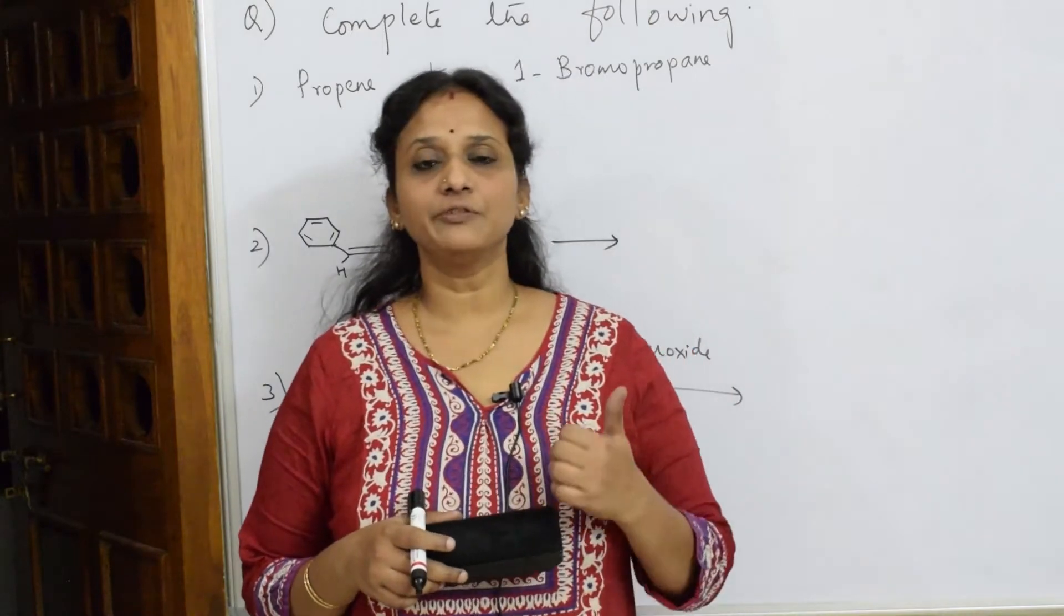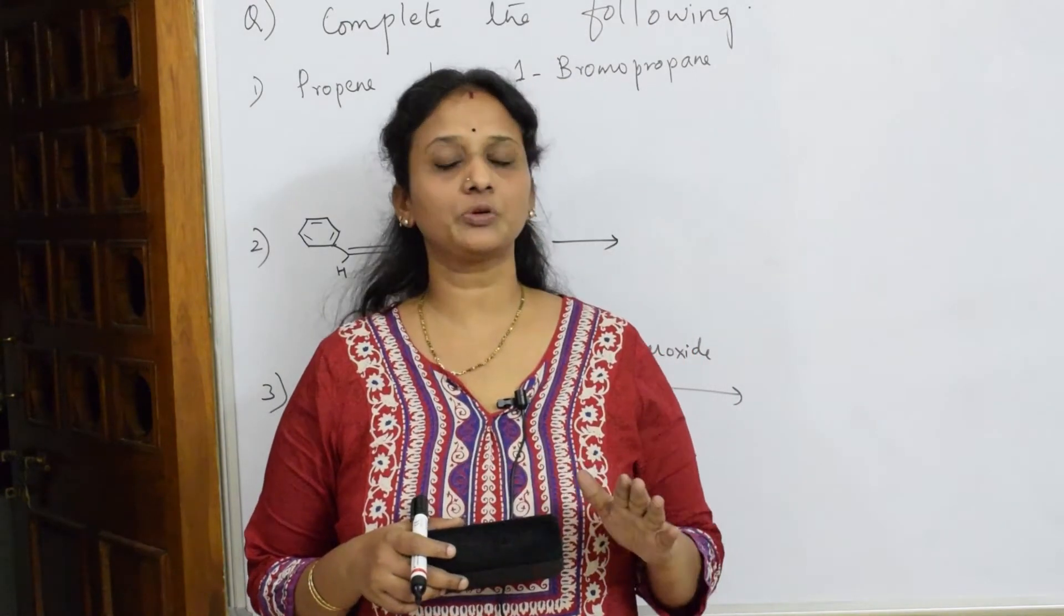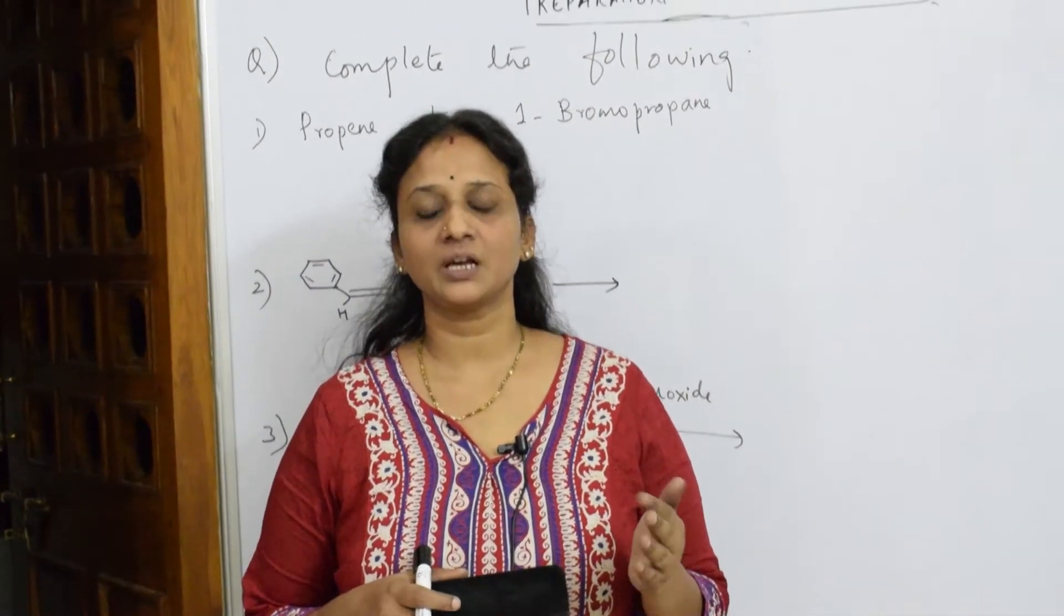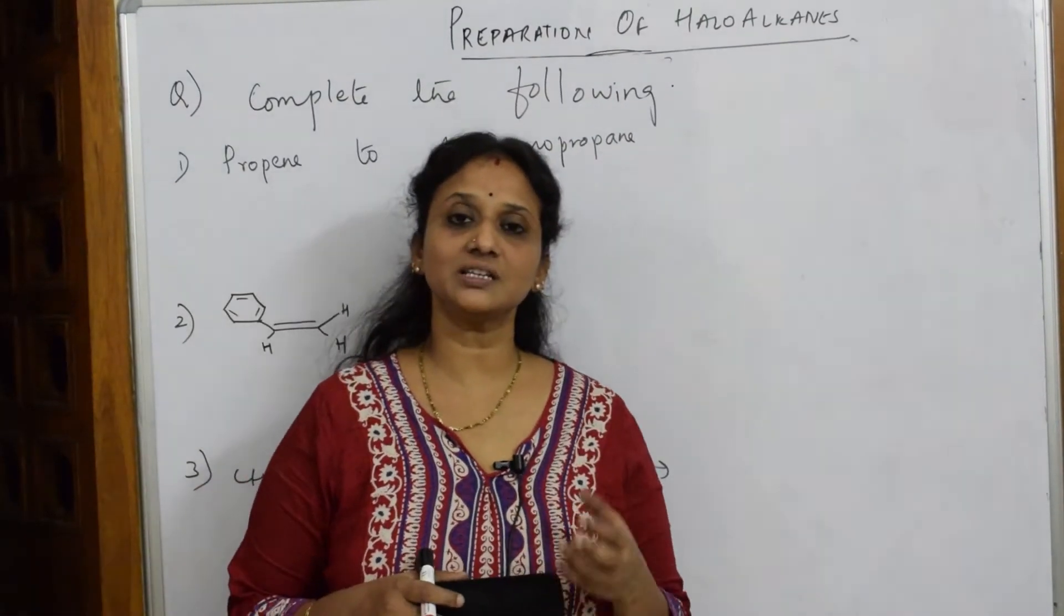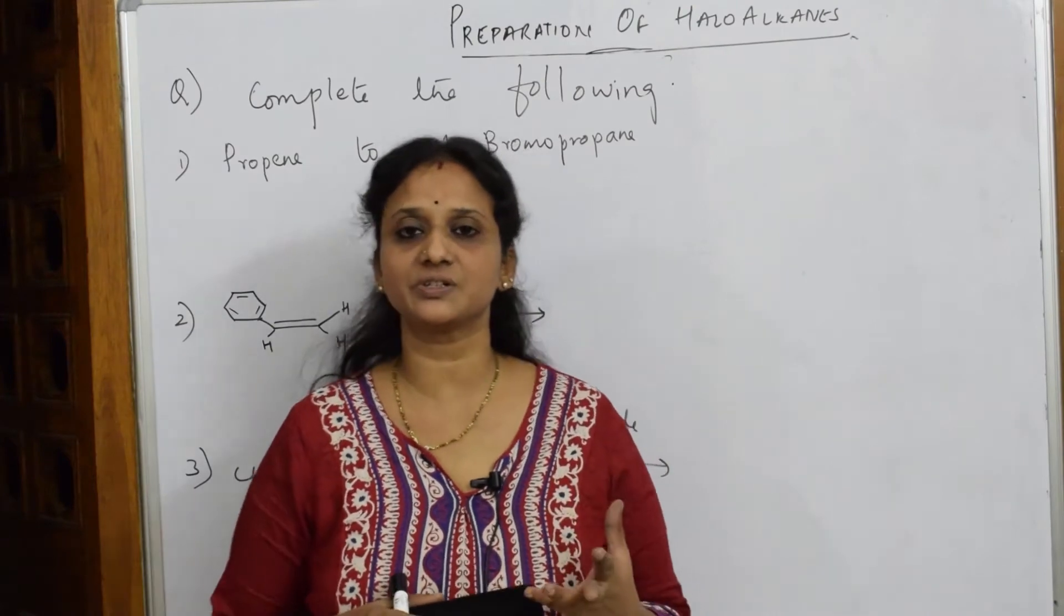So what should I remember? If it is symmetrical, not a problem, there is direct addition around the double bond. If it is Markovnikov addition, the condition is for unsymmetrical, it applies for the unsymmetrical alkenes.